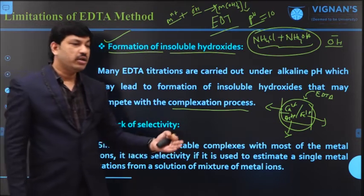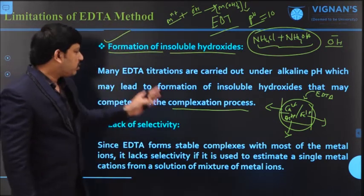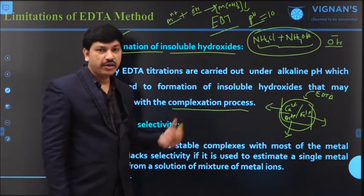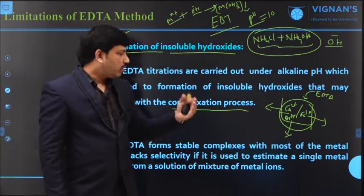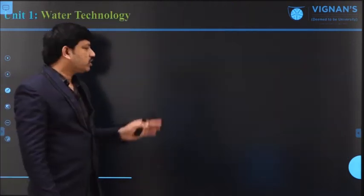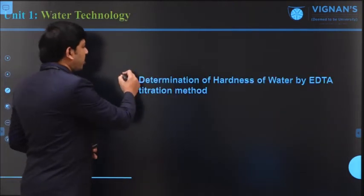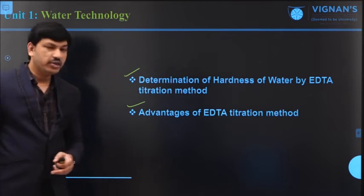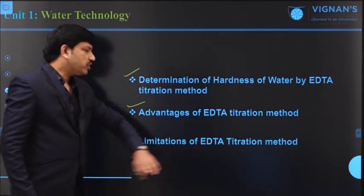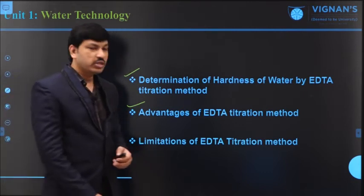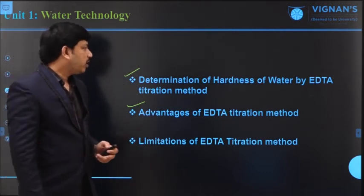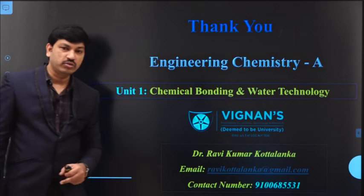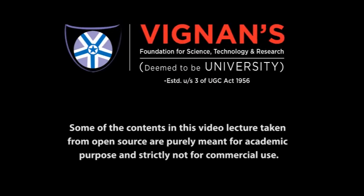That means it is very difficult to estimate the individual metal ion concentration from this method. EDTA always provides the collective amount of cations in solution but cannot give individual ion concentration — there is a lack of selectivity, as EDTA is not selective for one particular metal ion but reacts with any type. So like this we have some limitations and some advantages, but most cases we depend on the EDTA titration method to estimate the hardness of a given water sample. In the next session, problems related to EDTA method will be discussed.